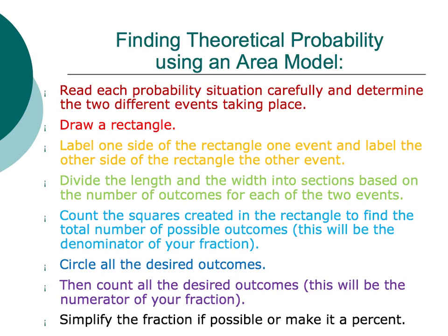We've looked at tree diagrams and we've looked at lists. Now we're going to look more closely at area models. The first step is to read each probability situation carefully and determine the two different events taking place. It could be a spinner and then tossing dice, a spinner and then flipping a coin, taking free throw shots, or looking at a path and finding all the different ways you can get from one spot to another.